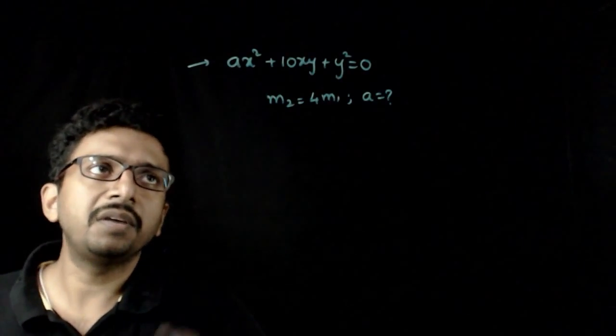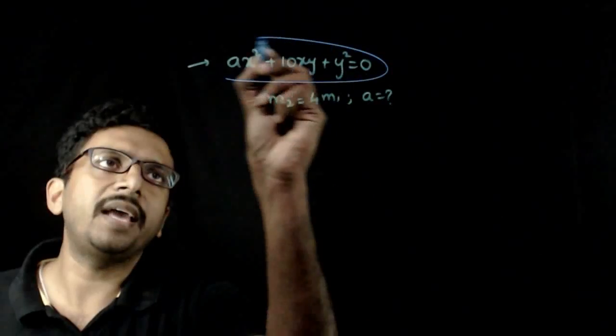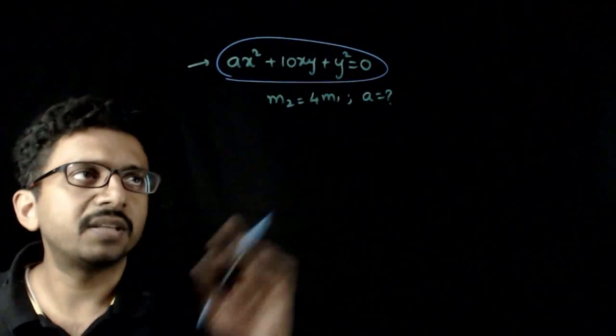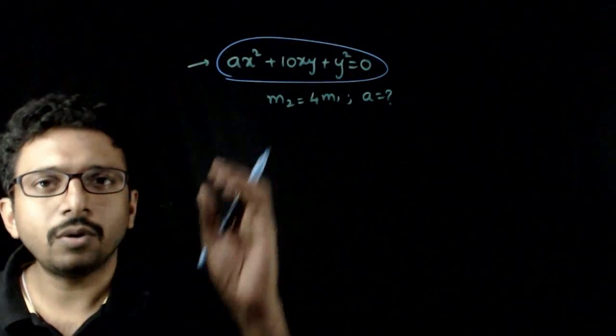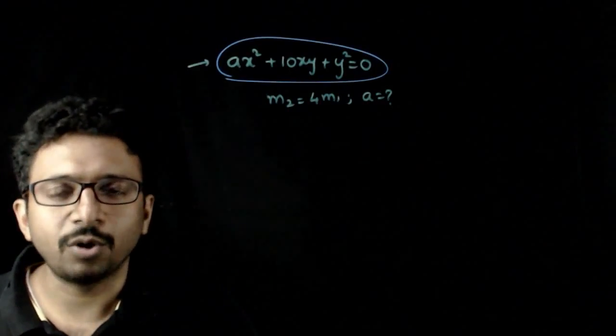Welcome students. In this question, you are given a pair of lines Ax² + 10xy + y² = 0, and one slope of this line is 4 times the slope of the other.